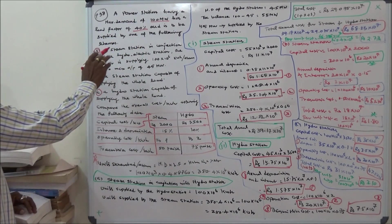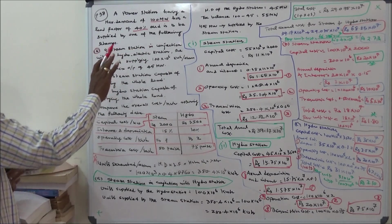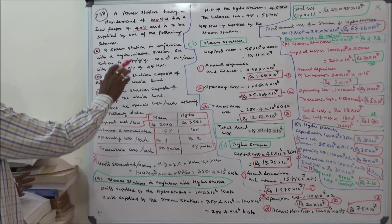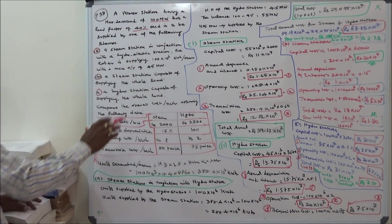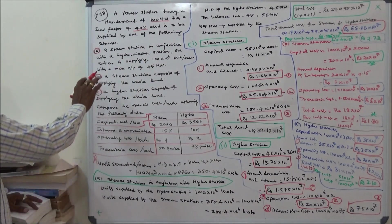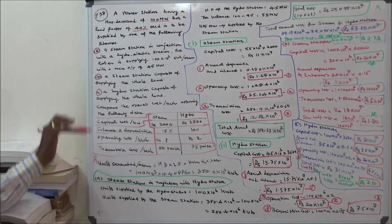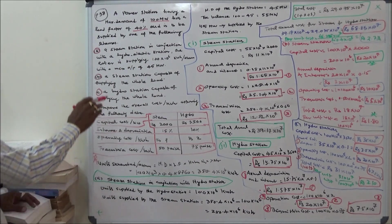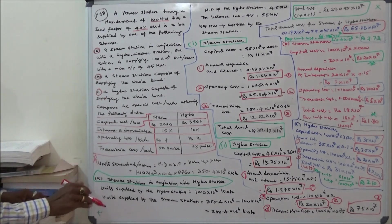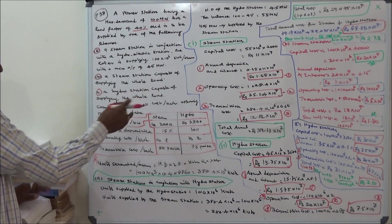Scheme A: A steam station in conjunction with the hydroelectric station, where the hydroelectric station is supplying 100 into 10 power 6 kilowatt hour per annum with a maximum output of 45 megawatts. Scheme B: A steam station capable of supplying the whole load. Scheme C: A hydro station capable of supplying the whole load.